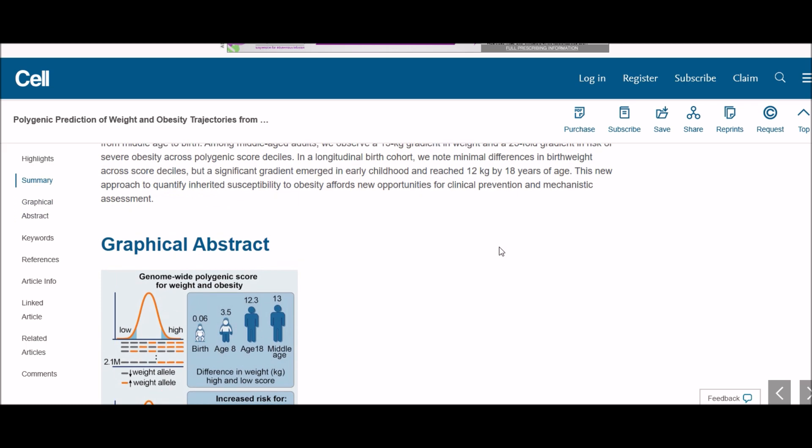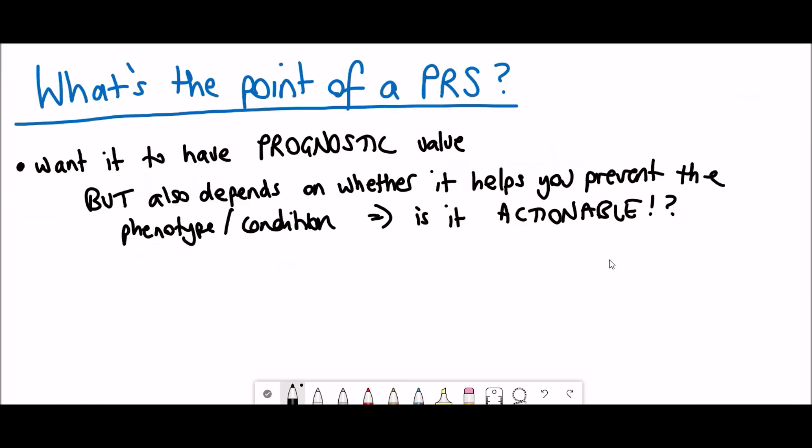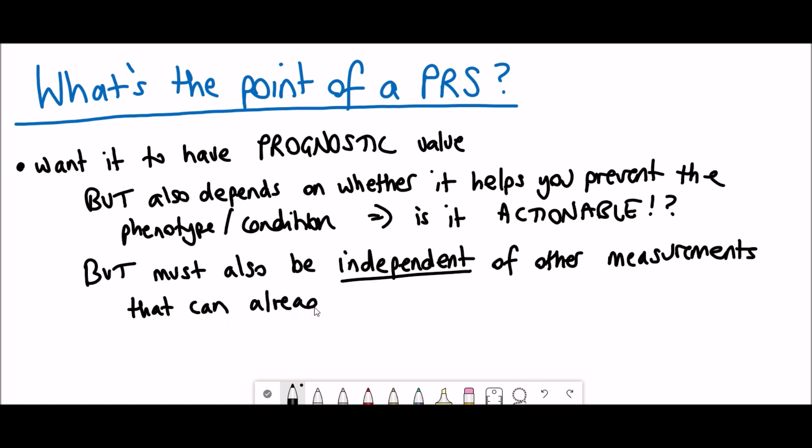But the other key thing is that these polygenic risk scores have to be independent of other information that you can already get. If you are going to help somebody and that person is already obese, then getting a polygenic risk score that tells you that they're going to be obese isn't really going to be much help because it's already going to be obvious. It's all about whether or not polygenic risk scores are going to be actionable and can be independent of other sources of information that we can already attain.